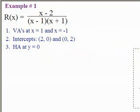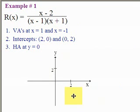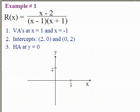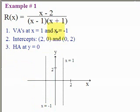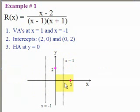Let's graph this function. I'll go through the thinking process you need when graphing these things. The first thing I'm going to do is pull in the vertical asymptotes: one at x equals 1 and one at x equals negative 1. Next, I'll plot the intercepts — there's an intercept at (2, 0) and a y-intercept at (0, 2). These two points will help me figure out what kind of shape the graph is going to take. And lastly, there's a horizontal asymptote, which I'll put in.